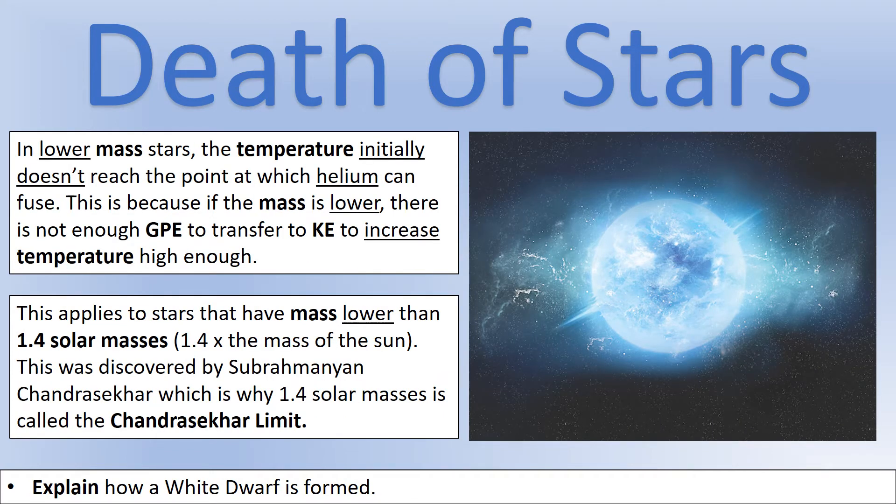So in lower mass stars, we don't reach a point in the core to start with where we start fusing helium. That comes later on. And that happens because if we have lower mass, we don't transfer as much gravitational potential energy into kinetic energy. So the temperature doesn't initially get high enough to fuse helium. And this happens if the mass of the star is less than 1.4 solar masses or 1.4 times the mass of our sun. And because this was discovered by Chandrasekhar, that means that got known as the Chandrasekhar limit. So if the mass is below this limit, that means we're going to end up with a white dwarf. If it's above this limit, that's when we get neutron stars, supernovas and all that kind of stuff going on.